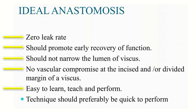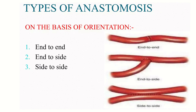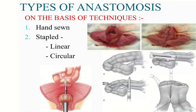There are different types of anastomosis based on orientation — those include end-to-end, end-to-side, and side-to-side anastomosis. On the basis of technique, the different types can be hand-sewn or stapled, which can be linear or circular.